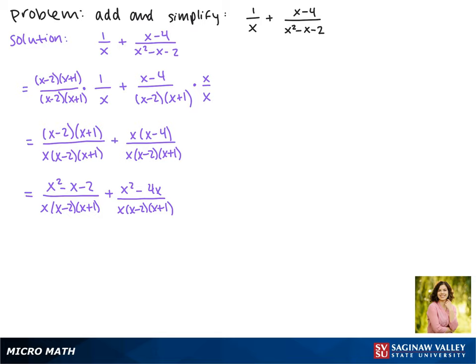Now we can combine the numerators. x² + x² is 2x². -x - 4x is -5x, and then we have our -2. Again, we're going to keep the denominator factored.